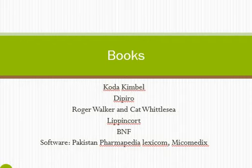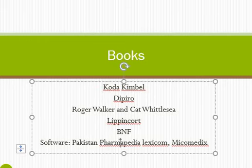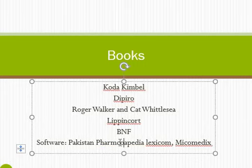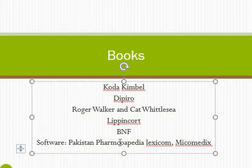Each student should have certain software installed on their phone — Pakistan Pharmacopedia and Lexicom or Micromedex. Lexicom and Micromedex are usually paid software and not typically available on Android. However, Pakistan Pharmacopedia gives brief information and quick access to a drug within seconds. You should install these applications so that dosage checking is easy, and you can also check the brand availability of a drug in Pakistan. For dosage calculations and brand availability, Pakistan Pharmacopedia is a good and useful software.